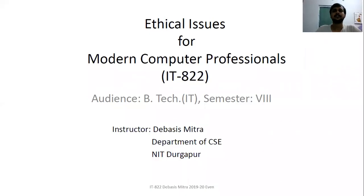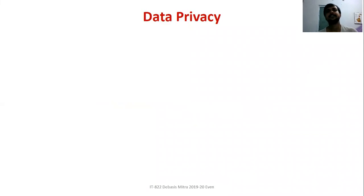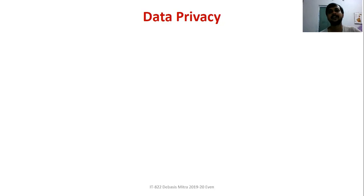Welcome to the fourth lecture on ethical issues for modern computer professions. During the initial boom of big data and machine learning, automated decision-making with fascinating applications — mainly mobile apps offering lucrative services — meant that issues regarding data privacy were hardly surfacing at the user level. Users were over-excited to get these services and barely bothered about what type of data was being collected, how it was utilized, or whether it was breaching privacy or leading to data leaks.